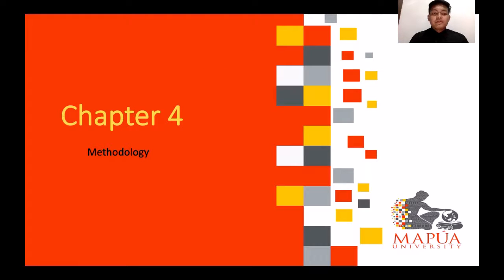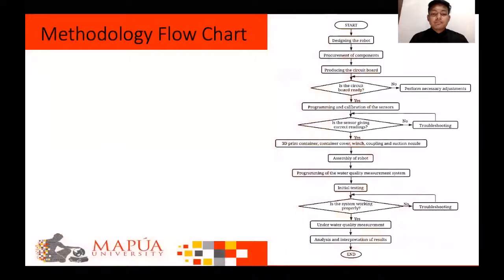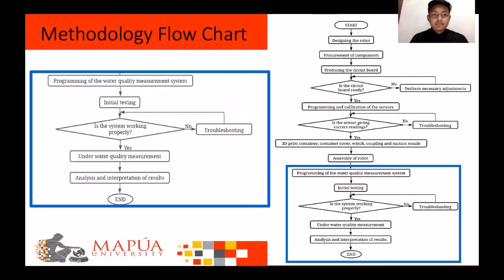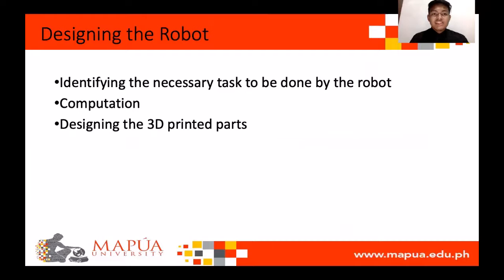In continuation of our presentation, this chapter is about the construction of the robot and how the quality of water is going to be observed. The methodology flowchart of the robot is presented here. The designing part of the robot is divided into three parts: identifying the necessary tasks to be done by the robot, computation, and designing the 3D printed parts.